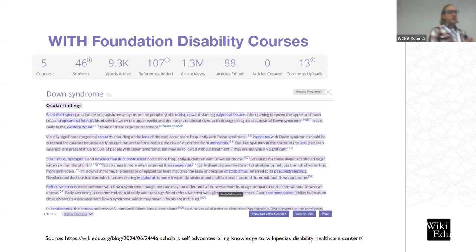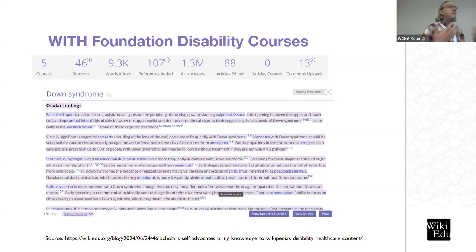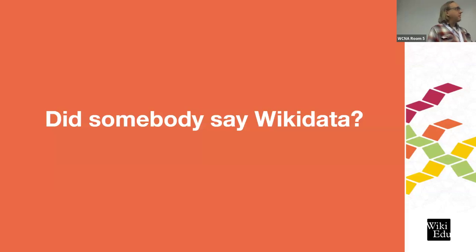Here's an example from one of the articles a participant worked on for Down syndrome. A whole section about ocular findings was absent from the article — it's multiple paragraphs with multiple citations, something you'd expect to already be there. This participant has lived with someone with Down syndrome his whole life, so he saw this immediately and said, 'This is what I'm going to do.' He drafted it in a sandbox, we edited it together, then he posted it live. It resulted in almost 10,000 words added, 100 new sources, and over a million views — huge numbers for this community and for the world.